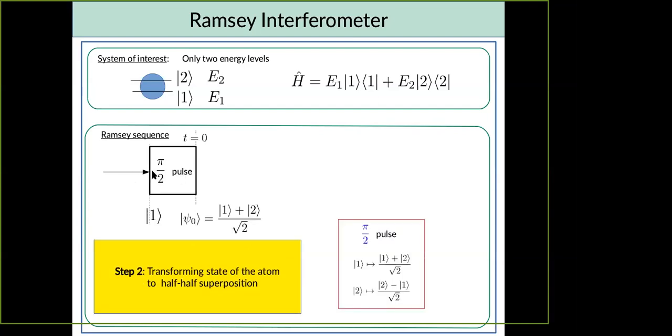Then second step of Ramsey interferometer is to apply π/2 pulse. And π/2 pulse is such transformation that it takes state 1 into superposition, half-half superposition 1 plus 2. If in the input would be state 2, then the superposition would be 2 minus 1. This is some sequence of laser pulses with well controlled power, with well controlled frequency, and it's possible to realize such gate in a real experiment. It's quite simple actually, it's done since more than half of the century. So after π/2 pulse, every atom is in the superposition 1 plus 2.